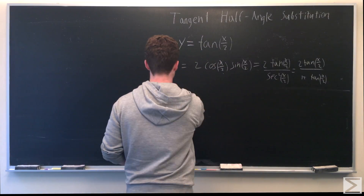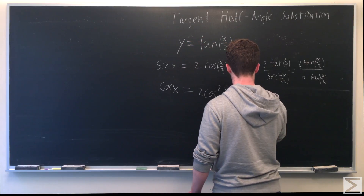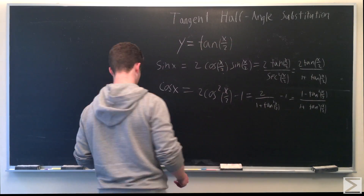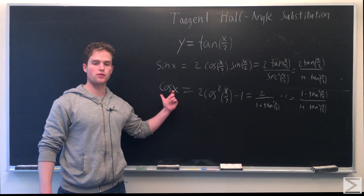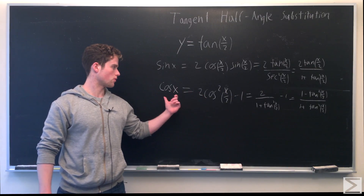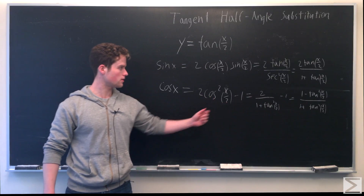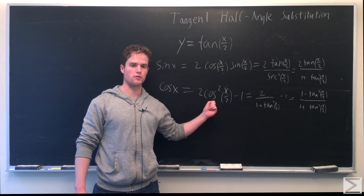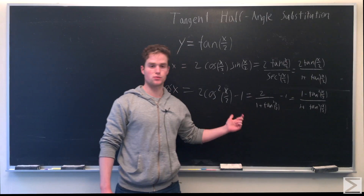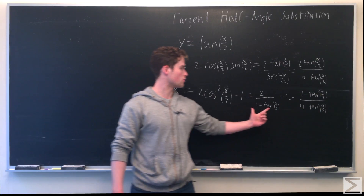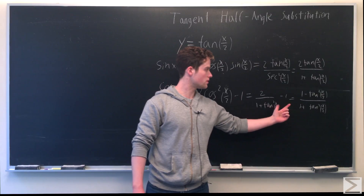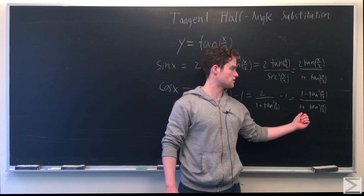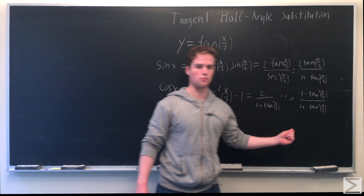Now for cosine x: remembering that cosine 2x equals 2 cosine²x minus 1, cosine x equals 2 cosine²(x/2) minus 1. Similar to what we did for sine x, cosine²(x/2) is 1 over secant²(x/2), and secant²(x/2) is 1 plus tan²(x/2). So we have 2 over 1 plus tan²(x/2) minus 1, which we can rewrite as 1 minus y² over 1 plus y².